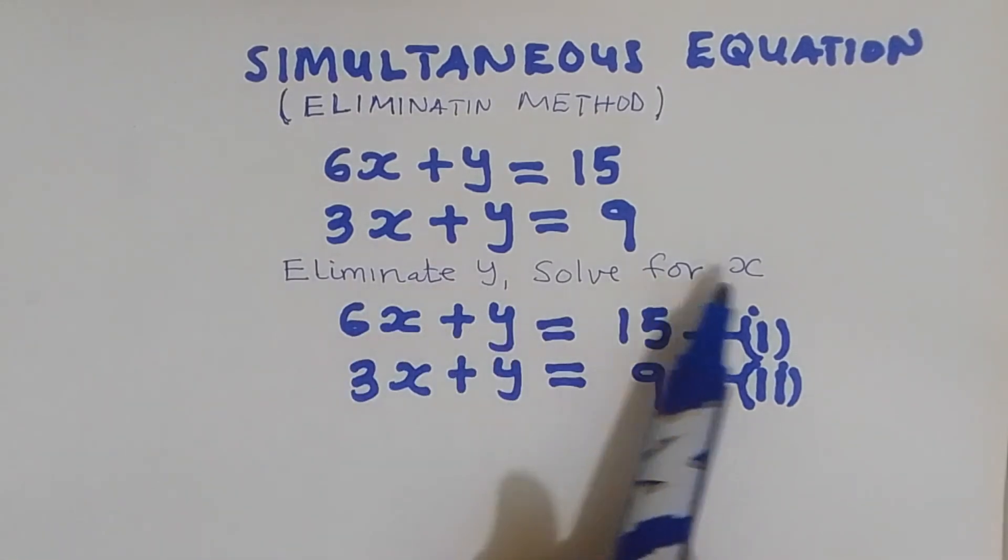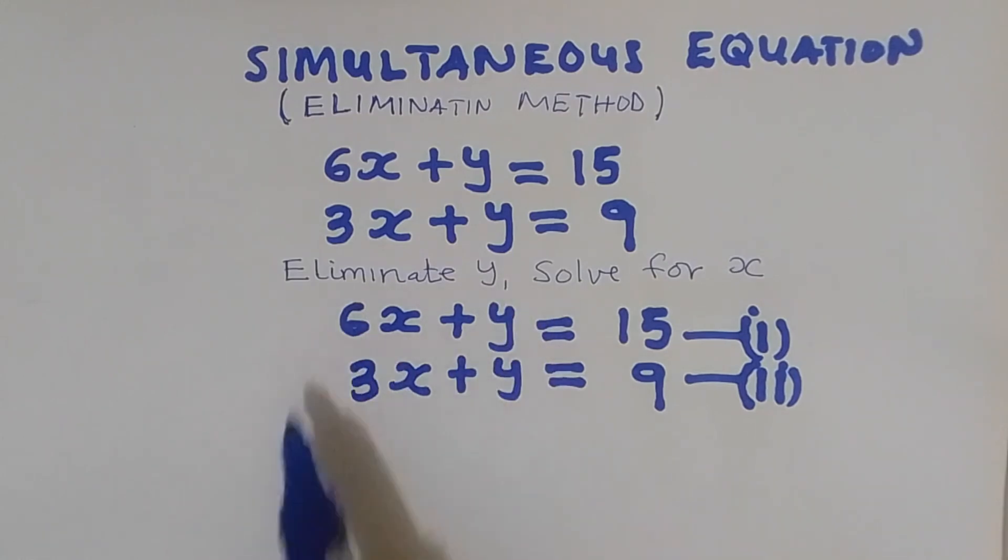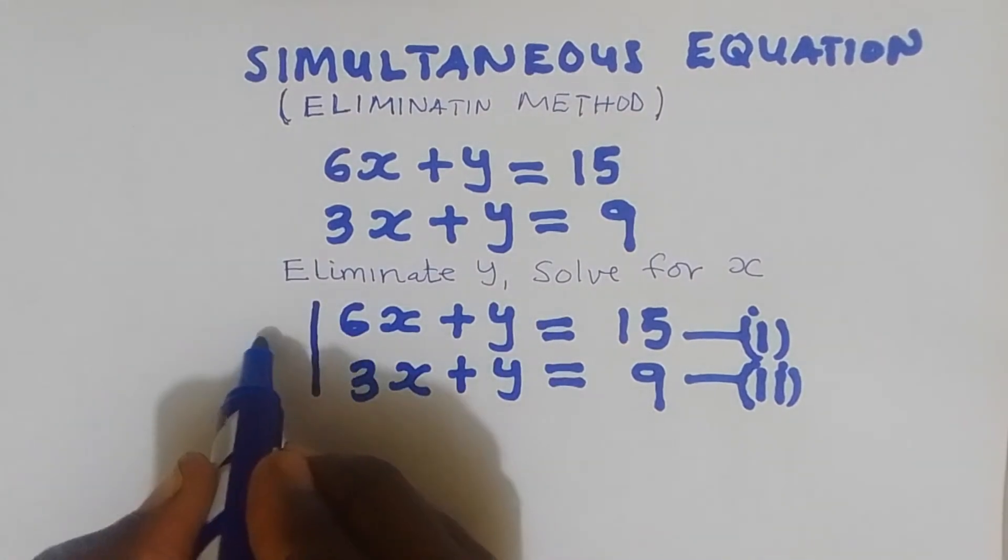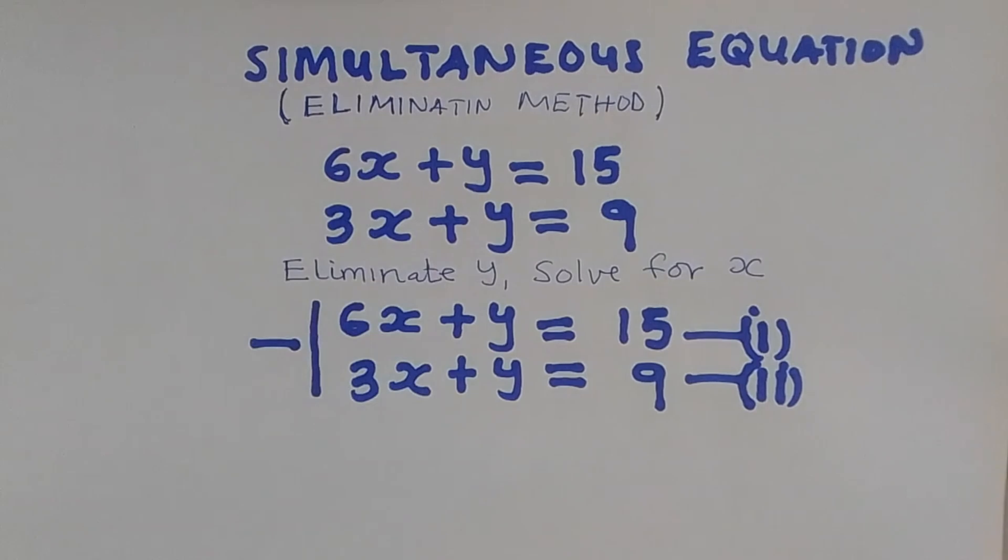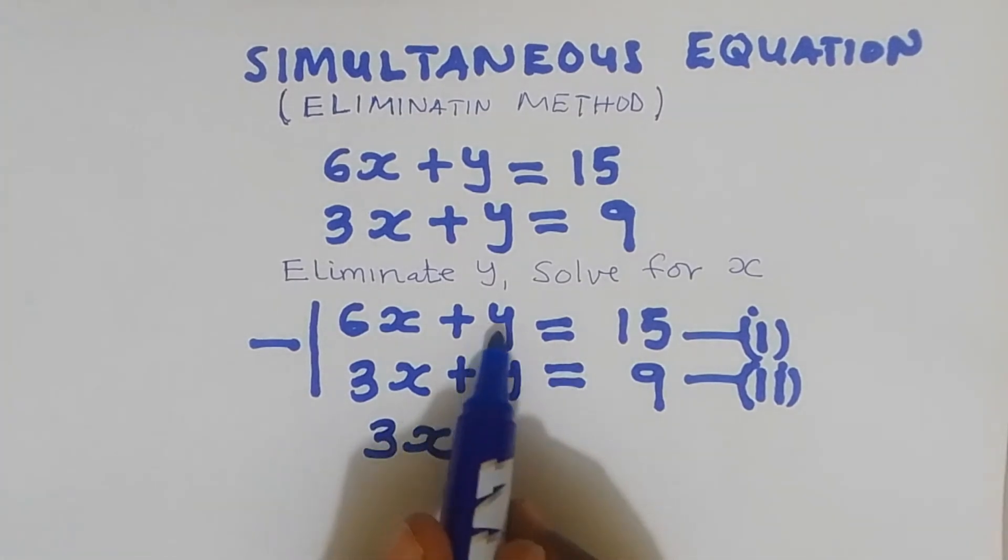I'm going to eliminate y and solve for x. So I'm going to eliminate this y here. What I'm going to do to eliminate this y, I'm going to subtract these equations. 6x take away 3x, I'm going to remain with 3x. Then y